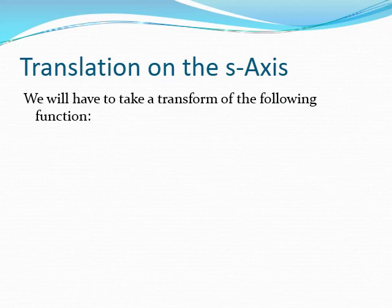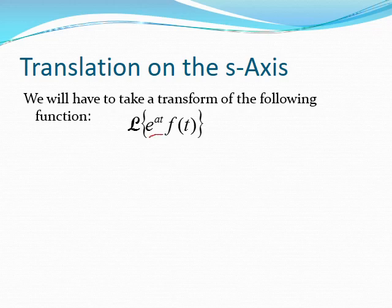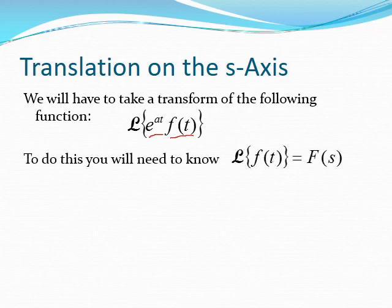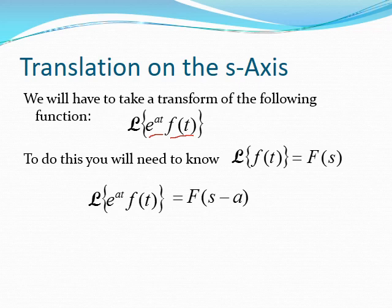Let's talk about translation on the s-axis. If we need to take the Laplace transform of an exponential e^(at) times some function f(t), we need to know the Laplace transform F(s) of f(t). The Laplace transform of e^(at) times f(t) equals F(s−a) — everywhere s appears in F(s), replace it with s minus a. That is the translation on the s-axis. Conversely, the inverse Laplace transform of F(s−a) yields the exponential factor.